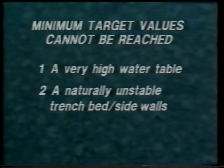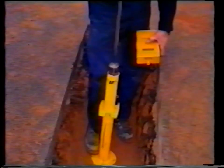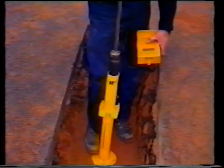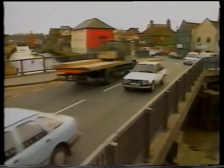On wet or soft material at any level within the reinstatement, the base plate itself will also leave an obvious impression. There may be some circumstances in which adverse conditions prevent minimum target values being reached — for example, a very high water table, a naturally unstable trench bed and/or sidewalls, or a soft clay bed and/or sidewalls. In such cases, the requirements for material grading and moisture content would still apply, though it may be necessary to reduce compaction of the lower layers if there is evidence of pumping, that is, water in the surrounding ground rising to the surface of the layers. In most cases of this nature, the upper layer should still achieve up to 3 IV less than the target value. These adverse conditions are rare, and local knowledge will generally help in the overall assessment.